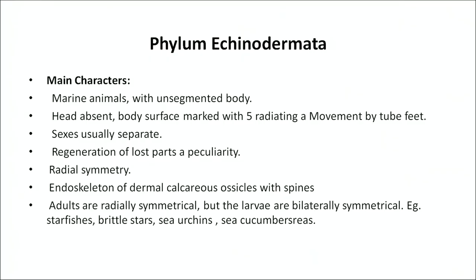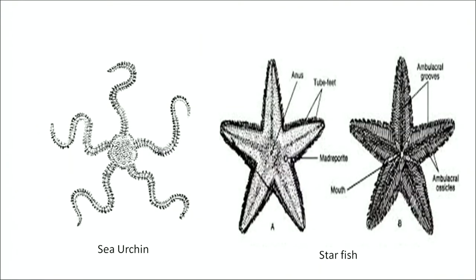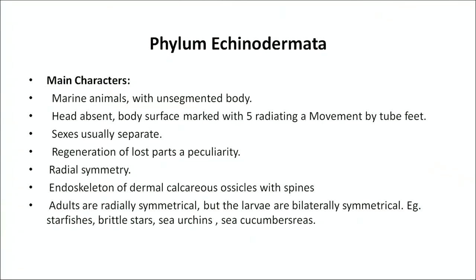The next phylum is Echinodermata, which includes starfish, brittle stars, sea urchins, and sea cucumbers. These are all marine animals with an unsegmented body; the head is absent. The body surface is marked with five radiating areas and they have radial symmetry. An endoskeleton of dermal ossicles with spines is present. They move by tube feet, and sexes are usually separate. Regeneration of lost parts is a peculiarity. Adults are radially symmetrical but larvae are bilaterally symmetrical.